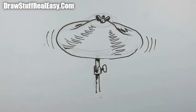Okay, keep coming back to Draw Stuff Real Easy. This has been Shoe Rainer. That's a very strange cymbal. Anyway, keep coming back to Draw Stuff Real Easy.